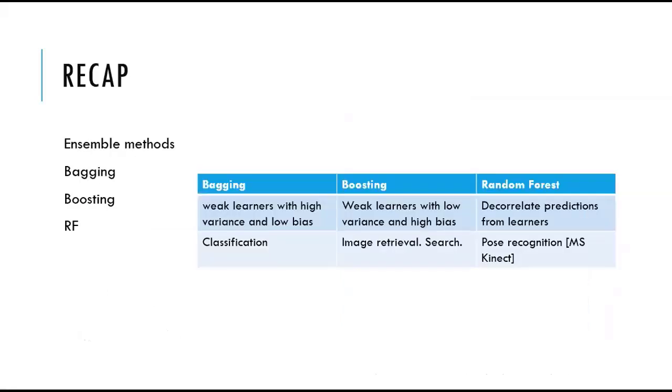Let's recap. Bagging is an ensemble learning method that trains weak learners with high variance and low bias. It's usually considered to be superior for solving classification problems. And usually, we can include decision trees or neural networks or mix of different other algorithms in the ensemble. Remember, bagging is going to improve the accuracy for unstable classifiers, unstable learning algorithms, for example, neural networks and decision trees.